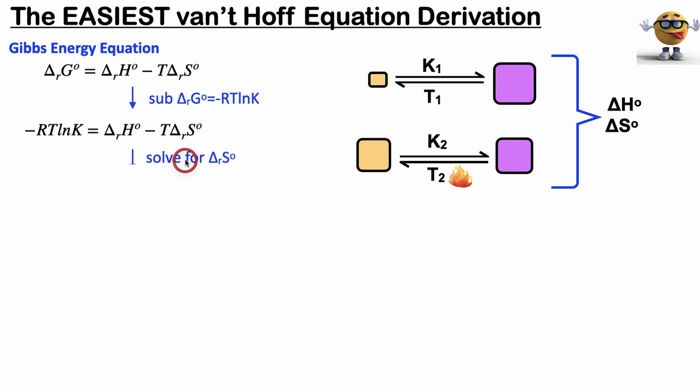If we do that, what we're going to do is solve for the change in entropy because this left-hand side is now equal to a constant. Then we can set it equal to itself at different temperatures with some minor rearrangements. We'll have the Van't Hoff equation in our hands.